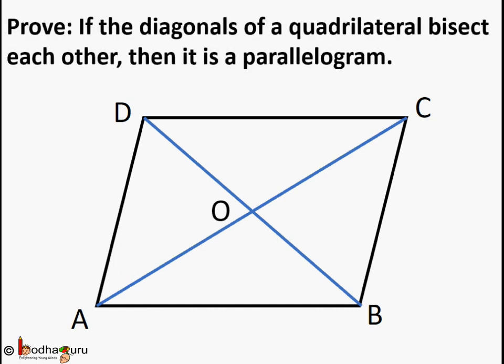Let us prove if the diagonals of a quadrilateral bisect each other, then it is a parallelogram. We take a quadrilateral ABCD. We draw two diagonals AC and BD. They intersect at point O.